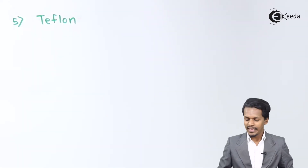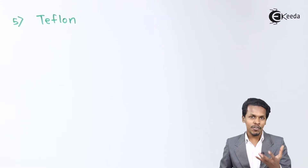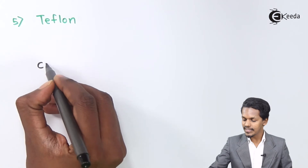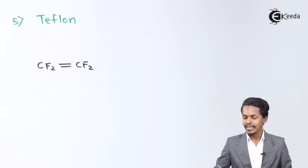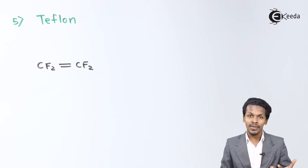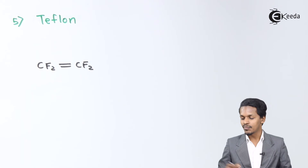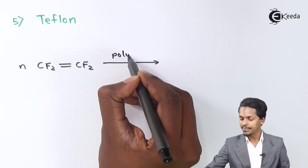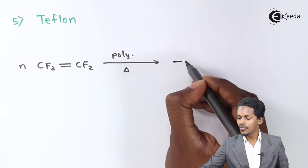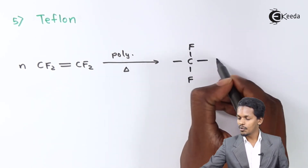Next is Teflon. The monomer used to form Teflon is CF2=CF2. Its IUPAC name is 1,1,2,2-tetrafluoroethene. We consider n moles of CF2=CF2, and if this undergoes the polymerization process, the repeating unit we get is –CF2–CF2–.